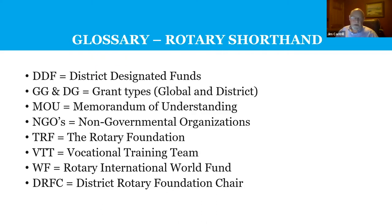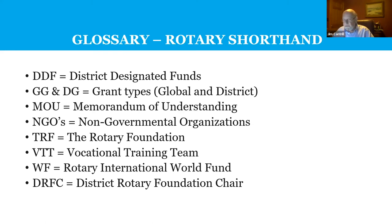To save a bit of time, we'll be using acronyms tonight. District Designated Funds is DDF. GG or DG are grant types — global or district. MOUs are memoranda of understanding. NGOs are non-governmental organizations. TRF is the Rotary Foundation. Vocational Training Team is VTT. Rotary International World Fund is WF. And the District Rotary Foundation Chair is DRFC.